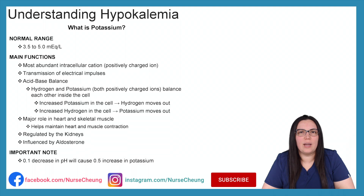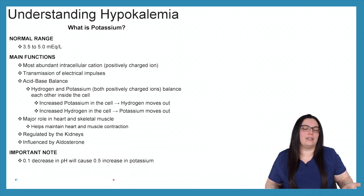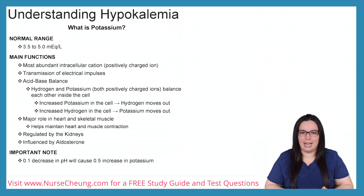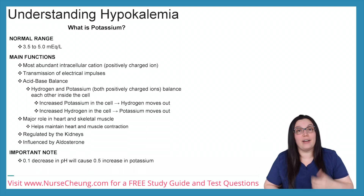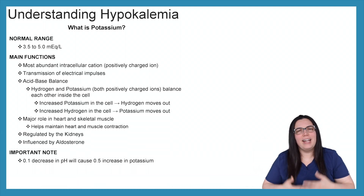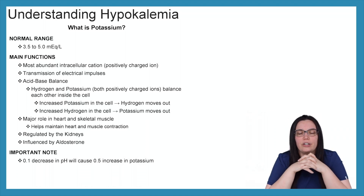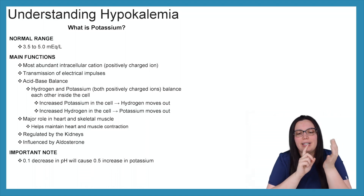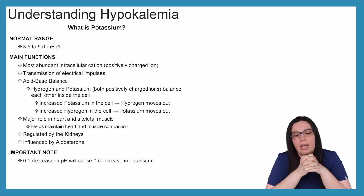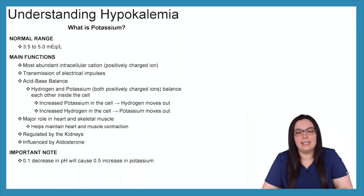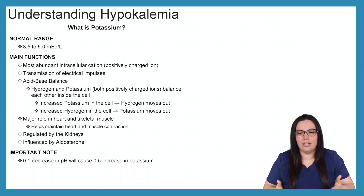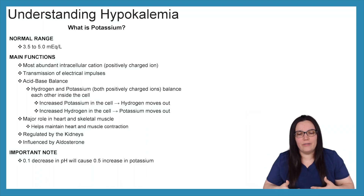In order to understand what hyperkalemia is, we need to know what potassium is. The normal range for potassium is 3.5 to 5 milliequivalents per liter. The main functions of potassium: it is the most abundant intracellular cation — a positively charged ion. It transmits electrical impulses and helps with our acid-base balance when it comes to hydrogen and potassium. They're both positively charged ions and they balance each other out, found both inside and outside of our cells.